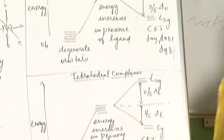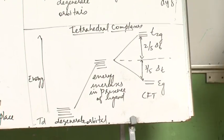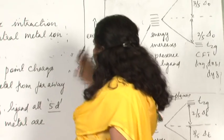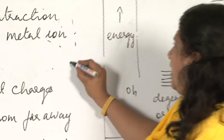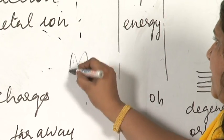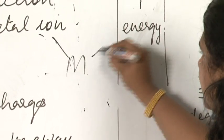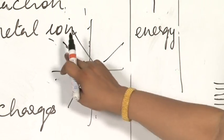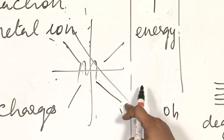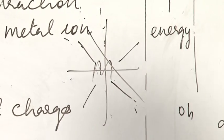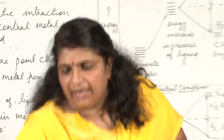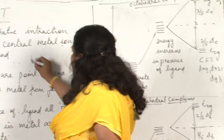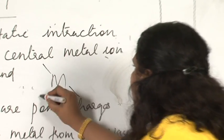In a similar way, in tetrahedral complexes you see the ligand approaches in a tetrahedra. In a tetrahedra, the ligands approach not from the axis. These are the axis. The ligand approaches in between the axis due to the geometry of tetrahedra. The ligand approaches the central metal ion not along the axis but from in between the axis like this.